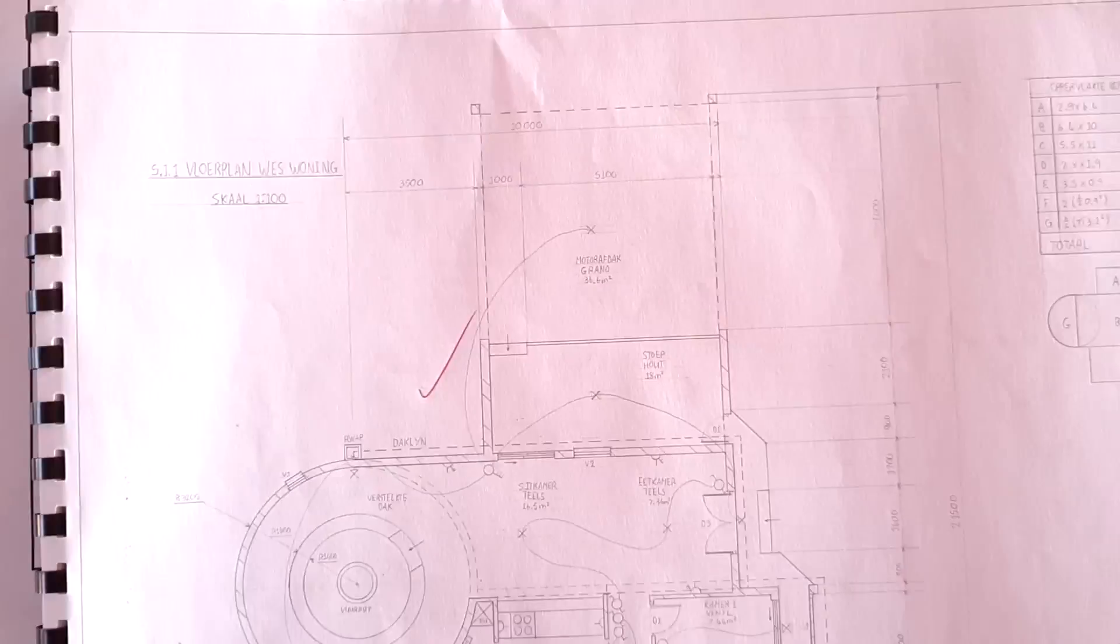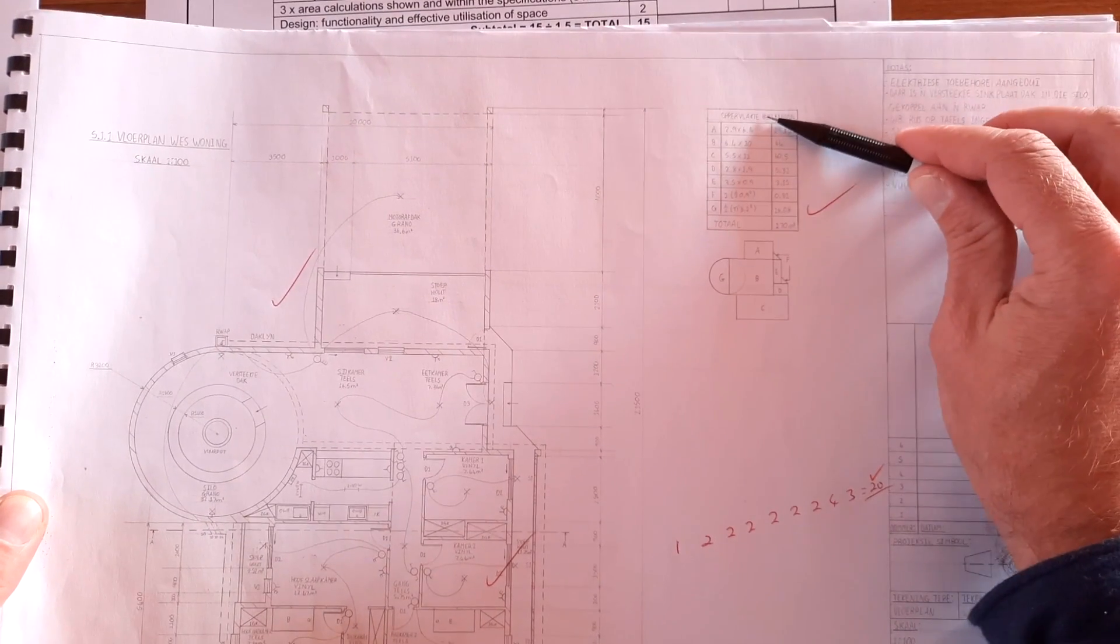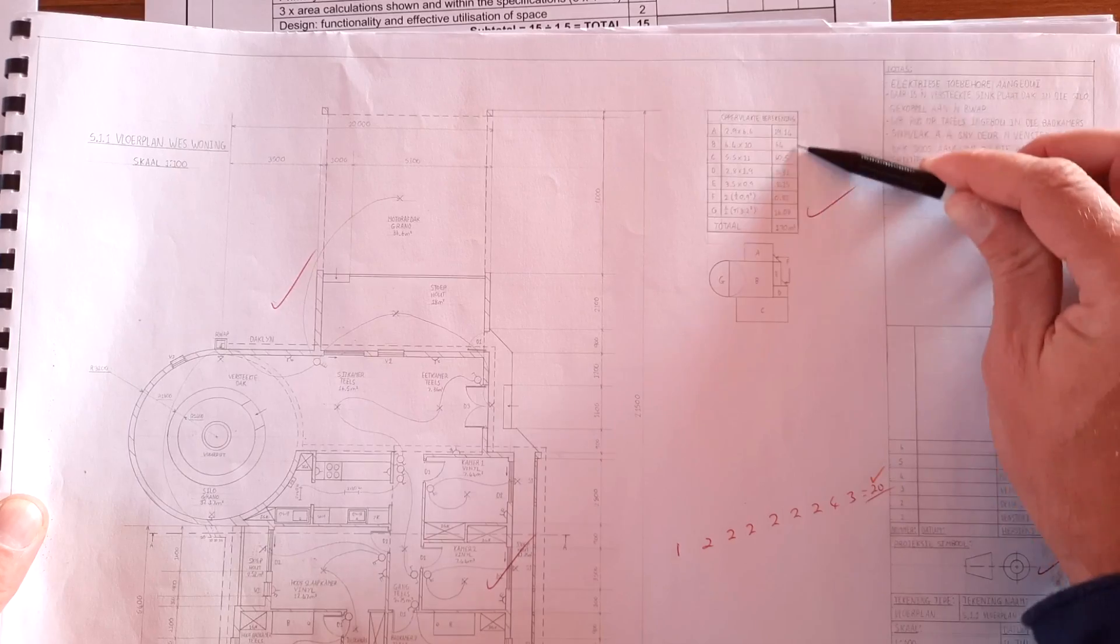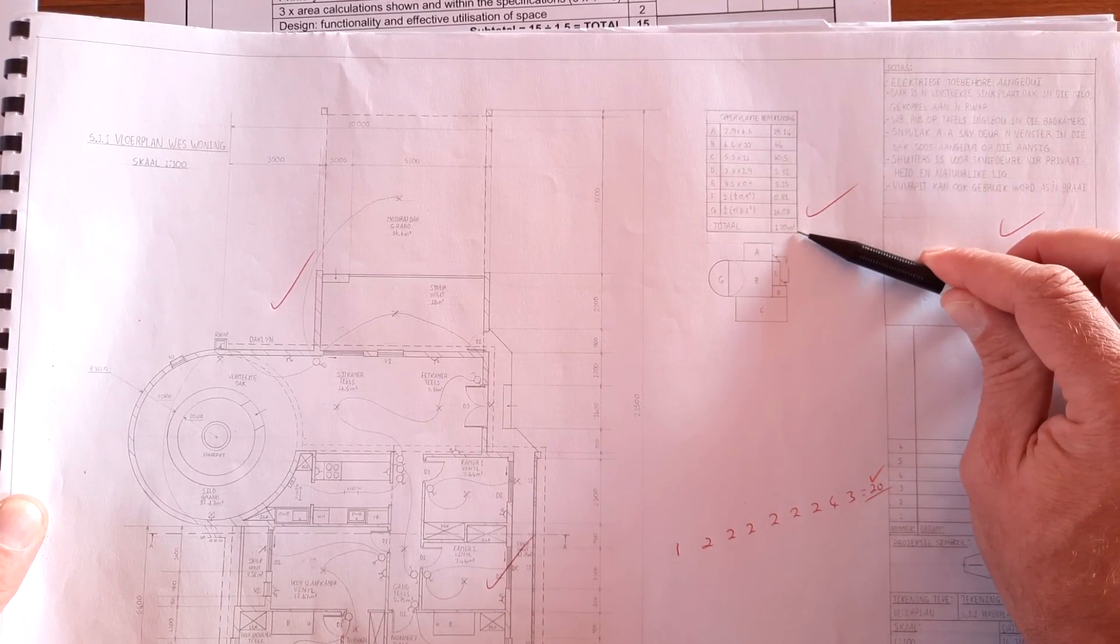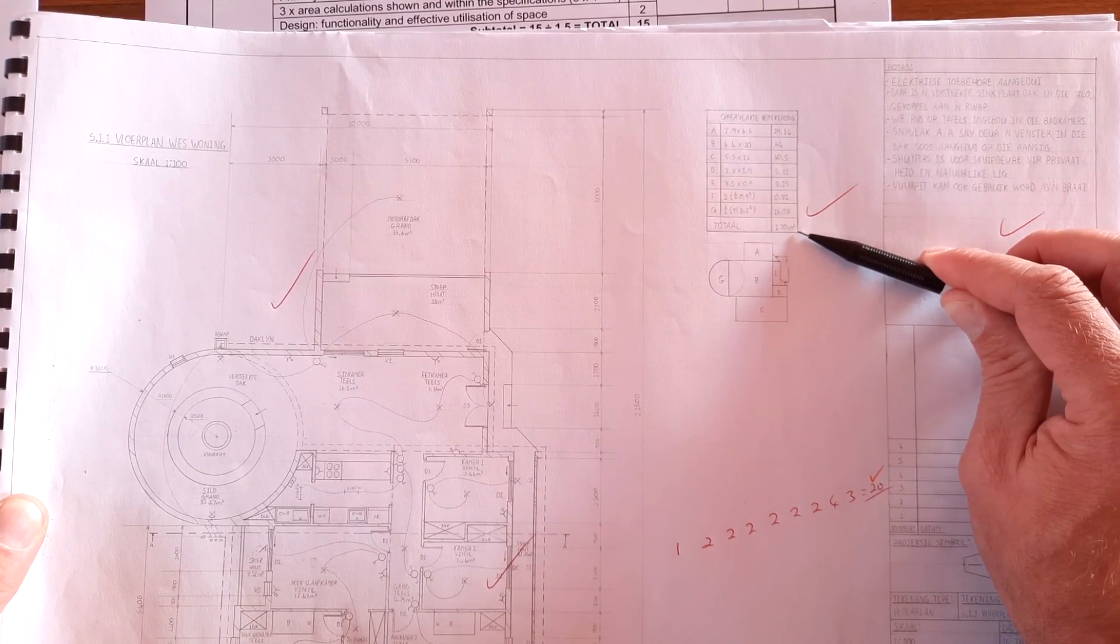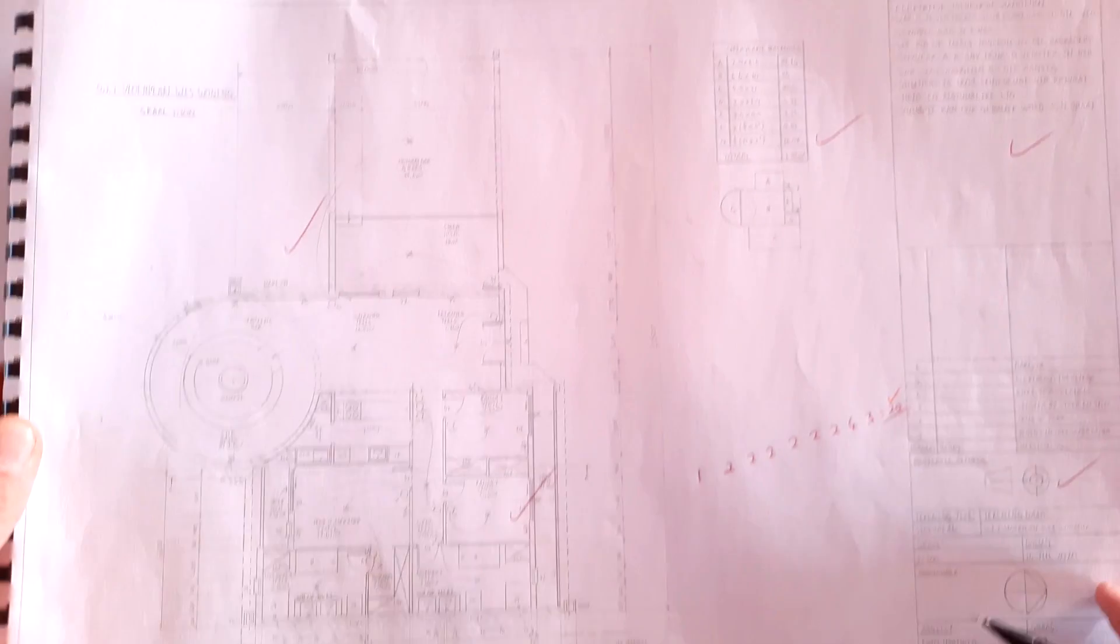Let me zoom out here a little bit. And then, of course, in this example, there was an area calculation, the different areas, and made sure that the calculation of that area is within the scope that was prescribed. That's an overview.